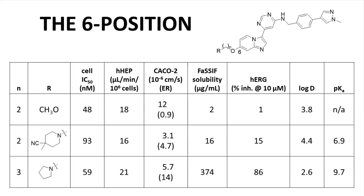We now have another series of analogs, pulled from Table 4 in the paper. The team settled on a pyrazole ring on the far right and focused on the sixth position of the core structure. The emphasis is now on improving ADME properties such as membrane permeability and solubility. By varying the number of carbons (N) in the tether and the identity of the R group, ADME properties could be tuned. Since we are modifying part of the structure away from the center of the binding pocket, potency across this series is relatively constant despite large variations in structure.